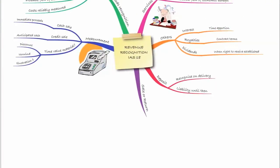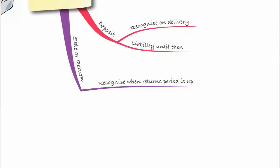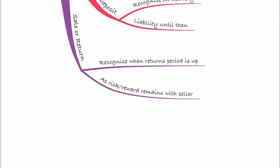Also consider revenue on a sale or return basis, where you sell goods to a customer who has the right to return them within 30 days if they don't sell them on. You need to think about the transfer of risk and rewards of ownership — that won't happen until the goods have been sold on by your customer. You can recognise when the returns period is up, or progressively as the customer sells them on. If unsold, you cannot recognise the revenue until the returns period expires, because the risk and reward remains with the seller — the goods could be returned.